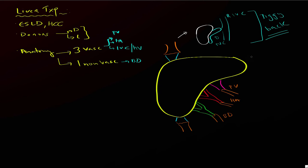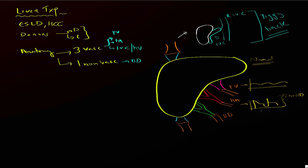Before we discuss complications, it's important to review the normal expected waveforms of these vessels. For the portal vein, you get a monophasic waveform — it flows towards the liver and may undulate gently due to the cardiac cycle and respiratory variation, but it's not very pulsatile. The hepatic artery is very pulsatile, with a sharp systolic upstroke and flow throughout diastole, a peak systolic velocity up to around 200 cm/s, and a resistive index ranging from 0.5 to 0.8. The resistive index is peak systolic velocity minus end diastolic velocity over peak systolic velocity.